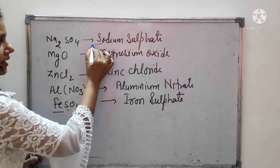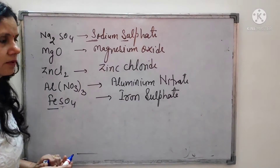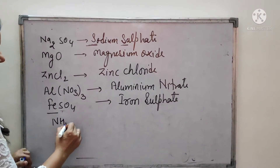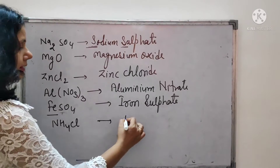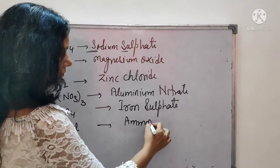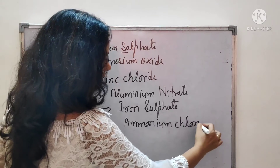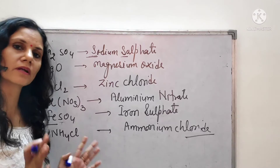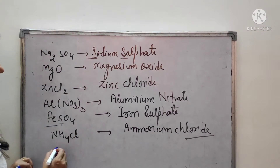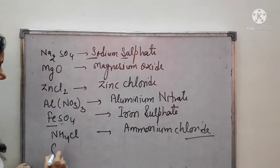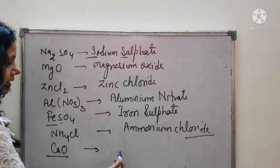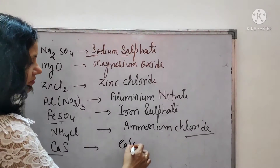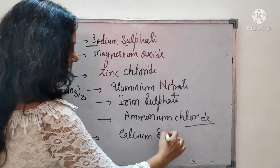Next: NH4Cl — this is ammonium chloride. So these are examples where you are given a formula and you write the name — same process. You don't need to memorize everything by rote; with the ion table you can build all the formulas. For example, CaO is calcium oxide, and if we change it to CaS, it becomes calcium sulfide.